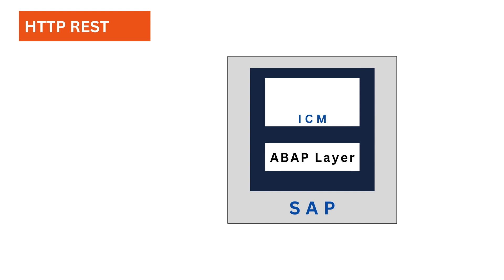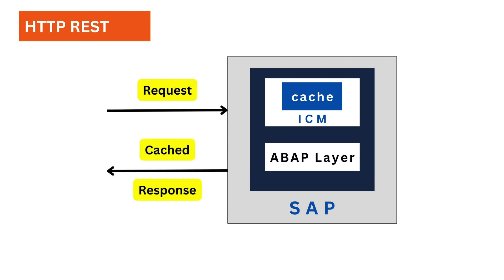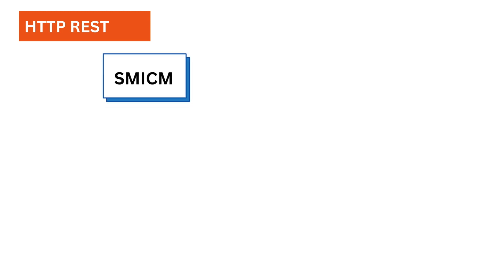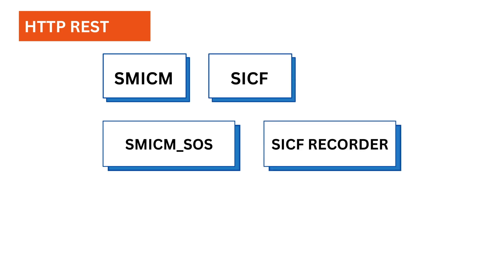In ICM, the Internet Communication Manager, we have a built-in cache mechanism. This is a very powerful mechanism when building a web application, as you can cache different HTTP objects. When working with ICM, there are some key transactions to remember: SMICM, SSOS, SSEF, SSEF Recorder, and SM59 — mainly for outbound integration.